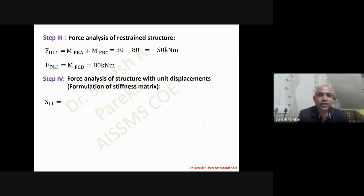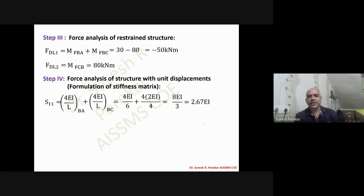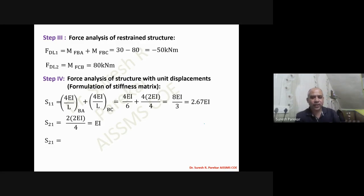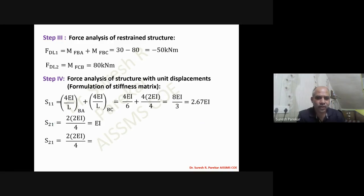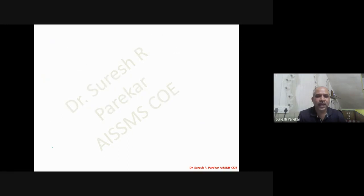Stiffness formulation: S11 = 4EI/L_BA + 4EI/L_BC = 2.67EI. S21 = 2×2EI/4 = EI. S12 = EI, and S22 = 2EI.